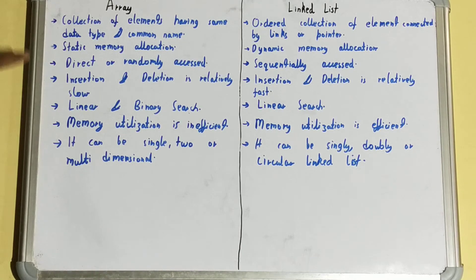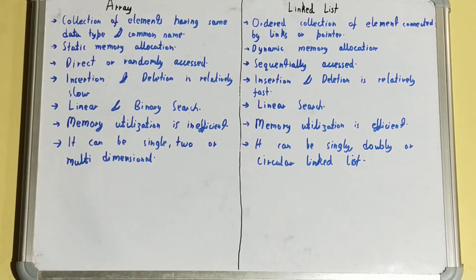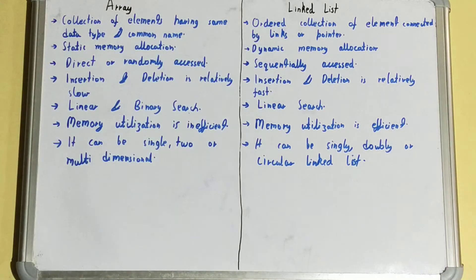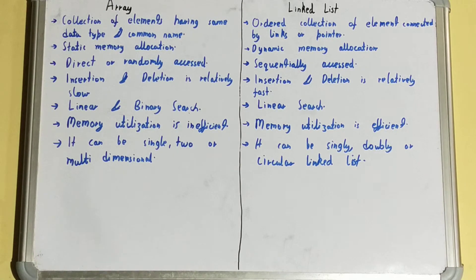An array uses static memory allocation — a fixed amount of memory is allocated before execution at compile time. A linked list, on the other hand, uses dynamic memory allocation, meaning memory is allocated at runtime as per needs or demands.